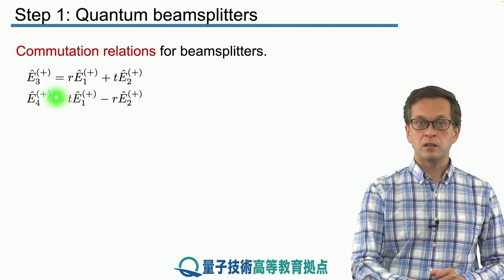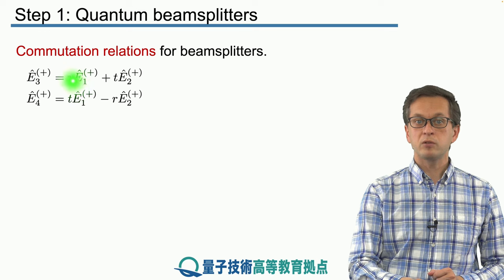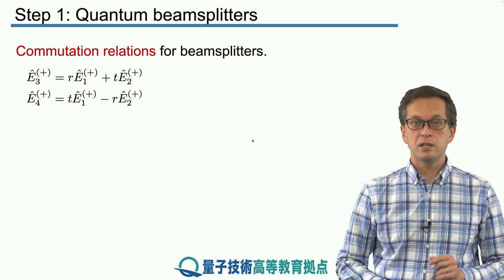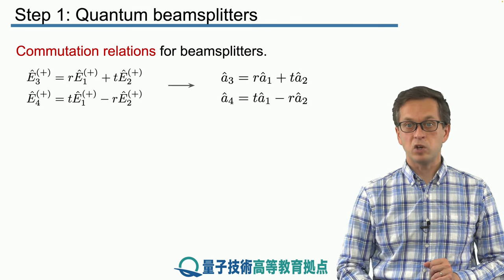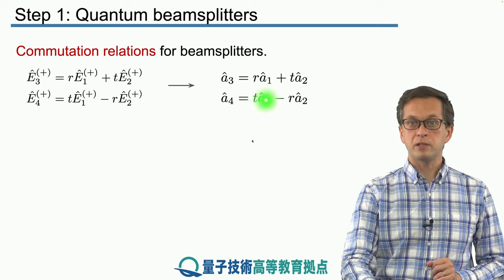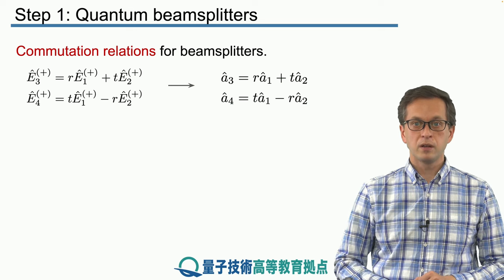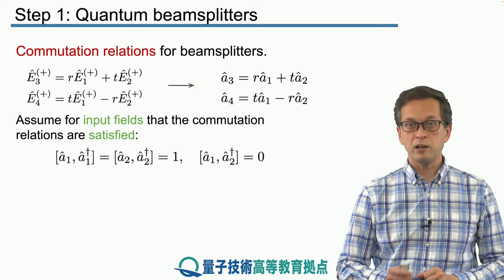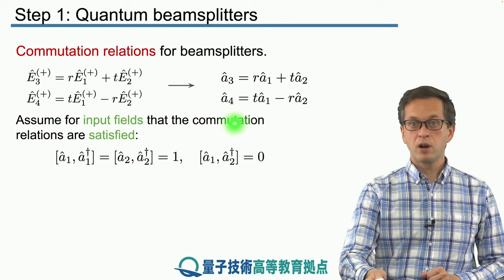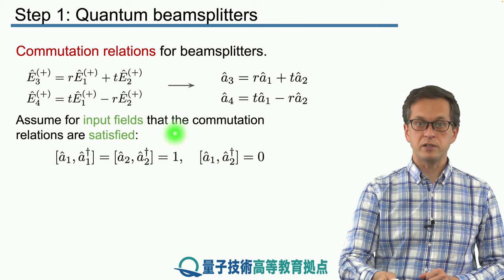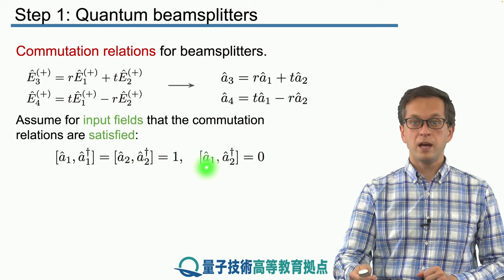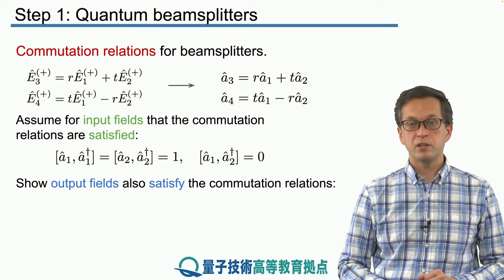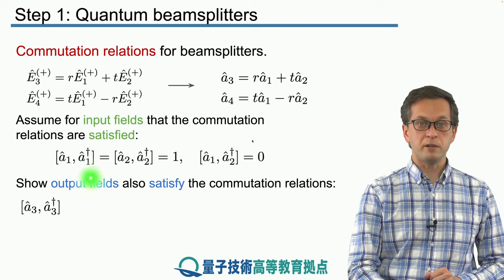Since we are considering light of a single frequency — single-mode light — all the exponentials inside Ê3 are going to cancel with the same exponentials from E1 and E2, and the same goes for the factor of i and the one-photon amplitude. So all we are left with are the creation and annihilation operators. Thus A3 equals R times A1 plus T times A2, and similarly for A4. At the output we must show that A3 and A4 commute in the proper way.